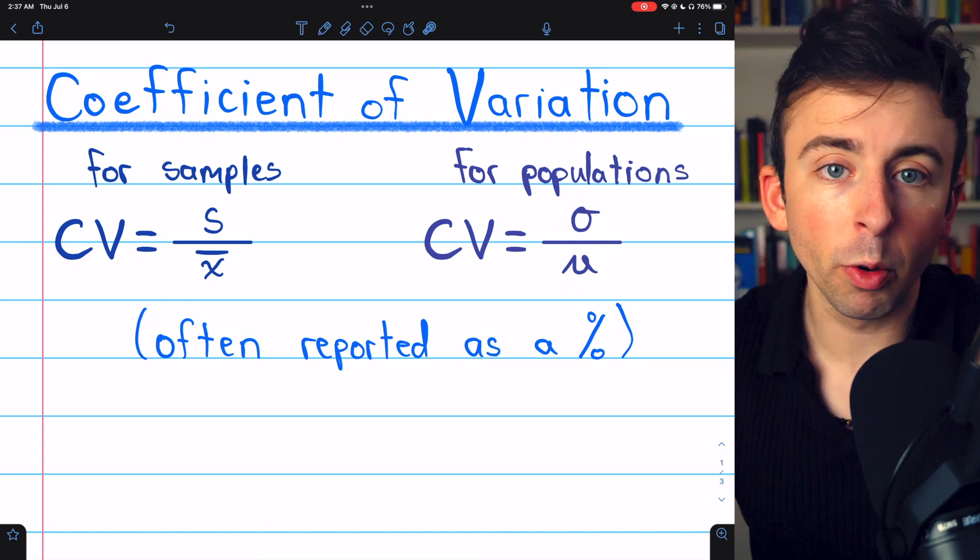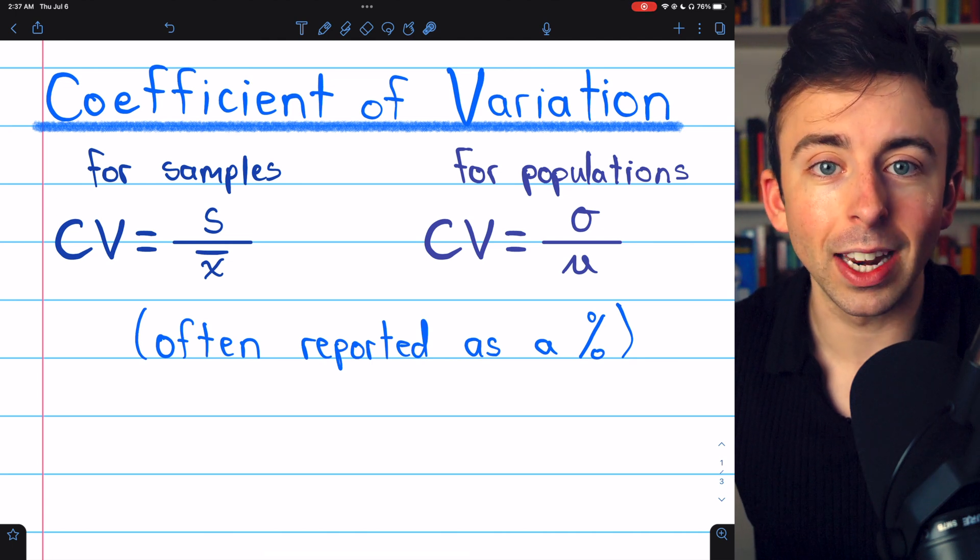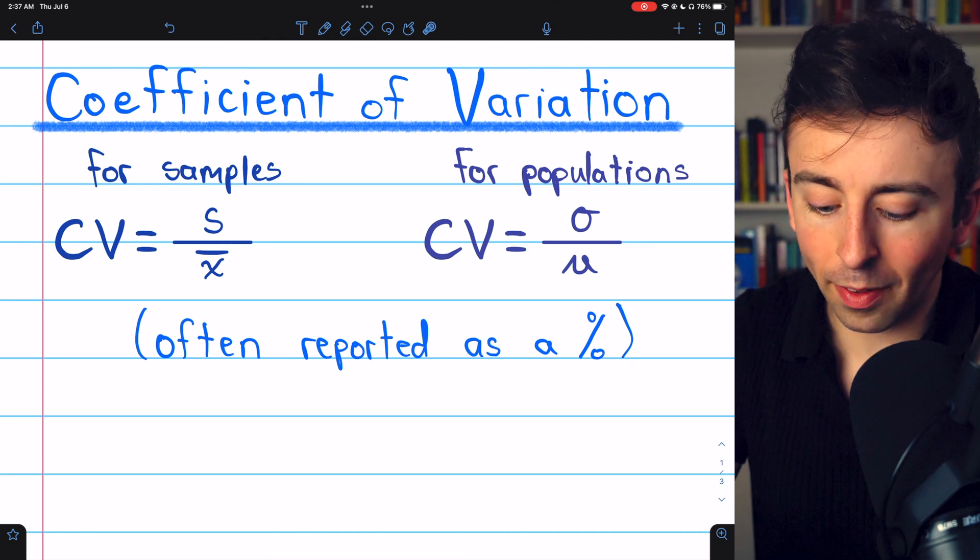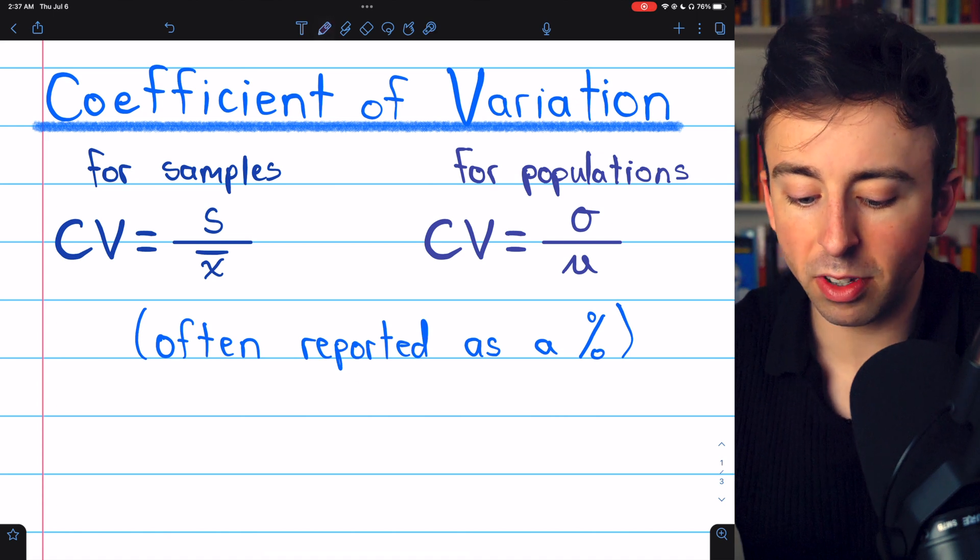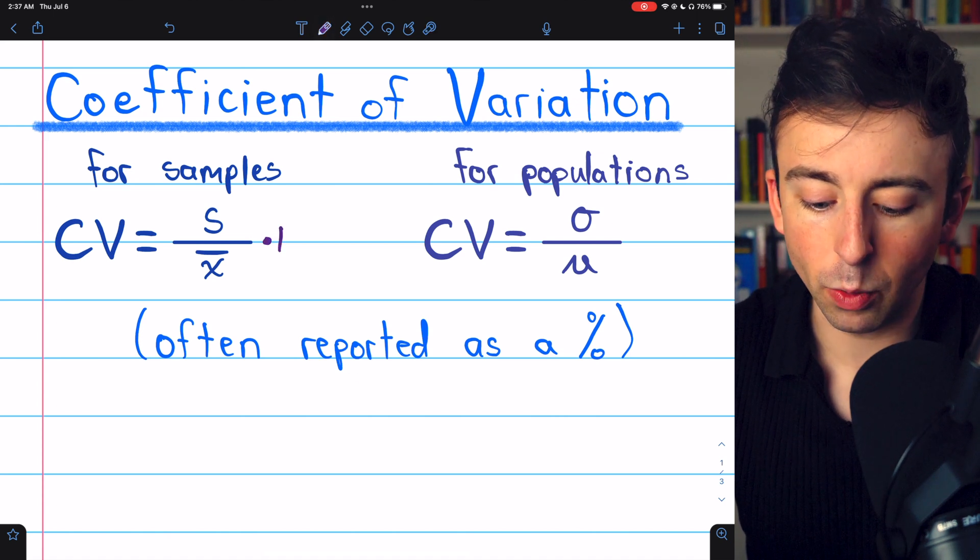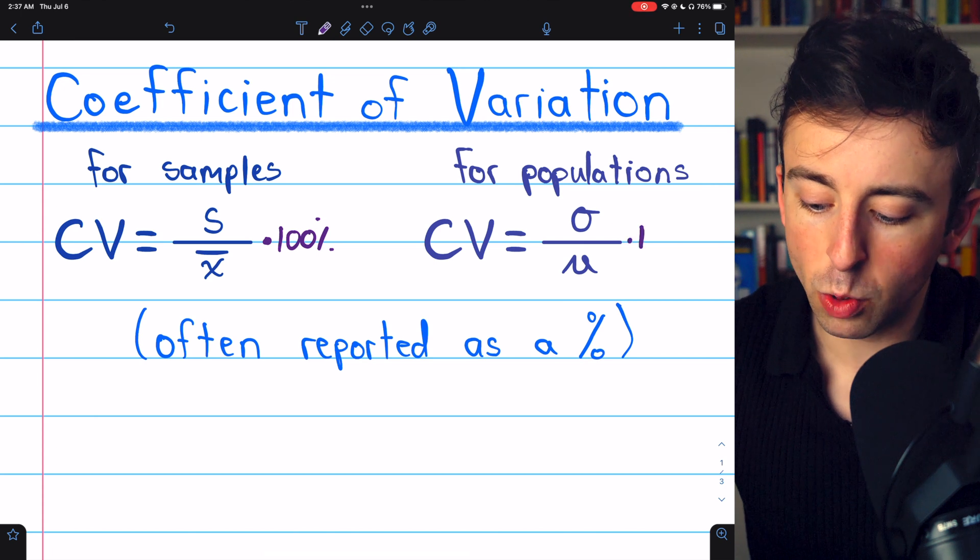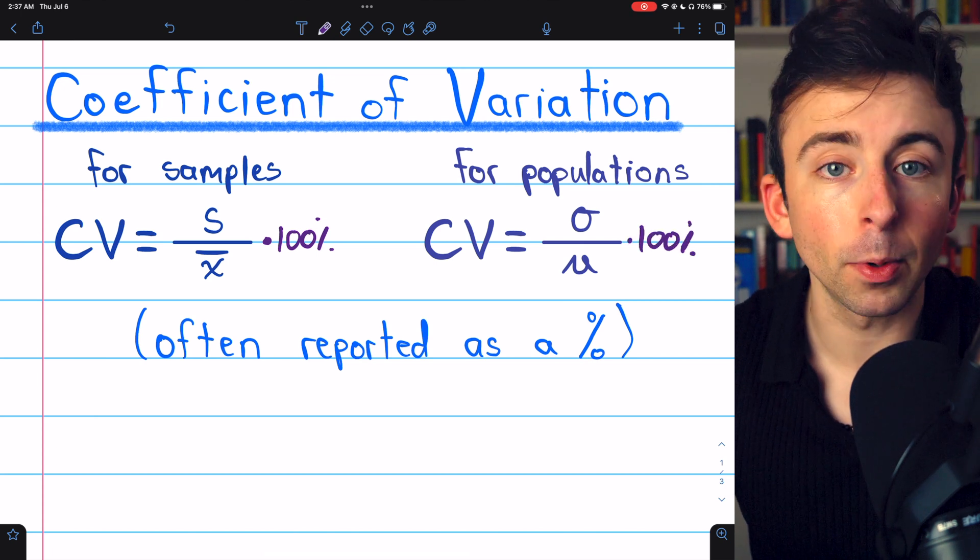Either way, the coefficient of variation is standard deviation divided by the mean. It's also often reported as a percentage, so sometimes you'll see the formula given with a multiplication by 100% just to convert it into a percent.